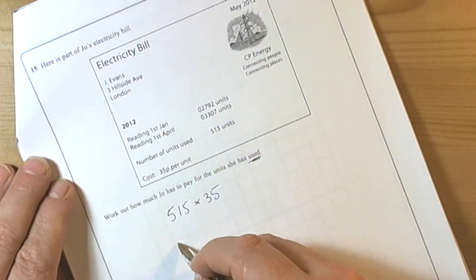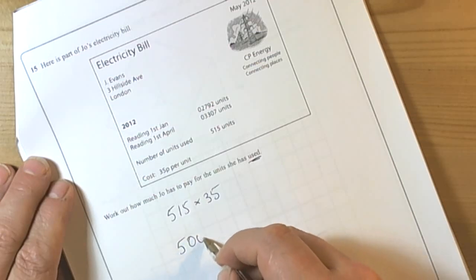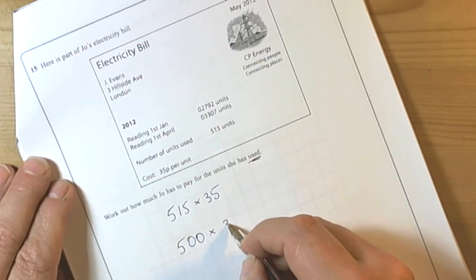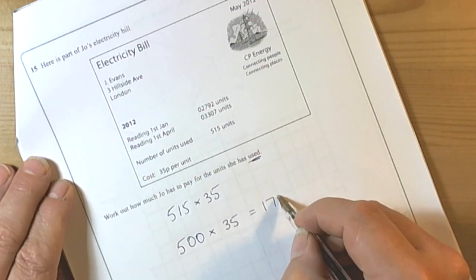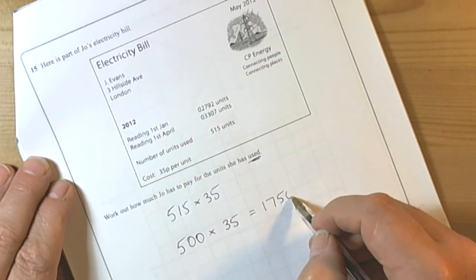Let's have a look. There are lots of ways of doing this. We could do 500 times 35. Five times 35 is 175, and then we have got the two zeroes to move it up two places.